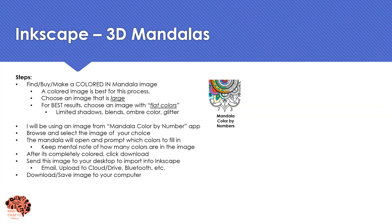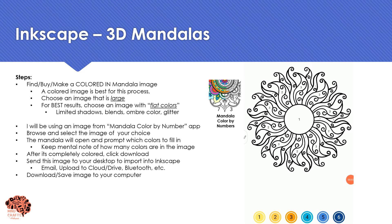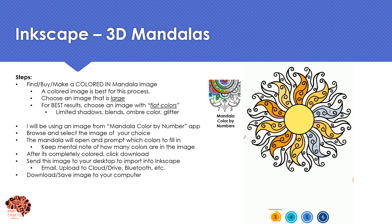First we need to find a mandala file. You can either get one online or buy one on Etsy. I'm going to be using Mandala Color by Numbers. I like this app because I don't like to think about color combinations — it allows me to just color it in, and once I'm done coloring I get the option of downloading the file. Once downloaded, I'll email it to myself, save it onto my desktop, and then import it into our next step.